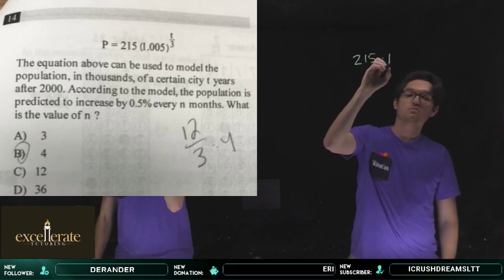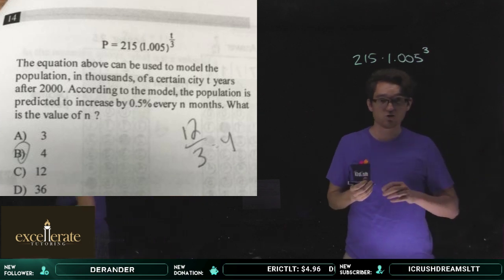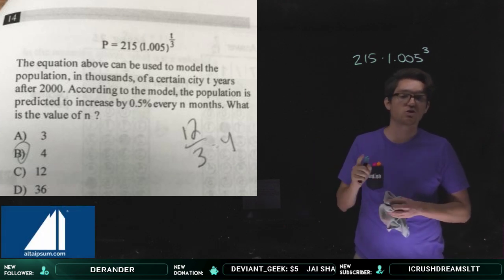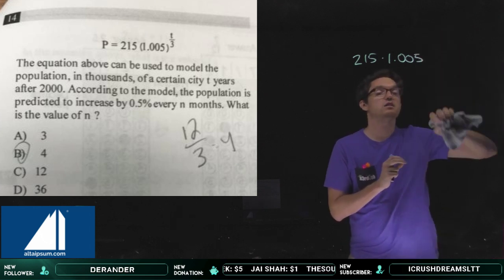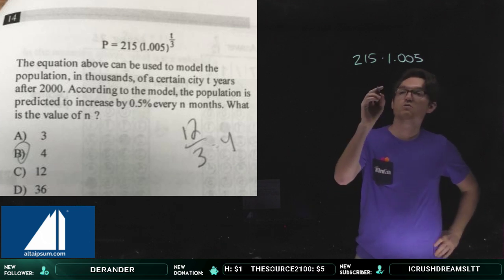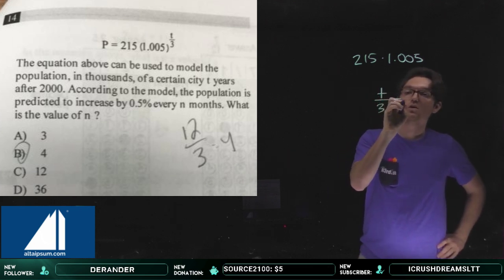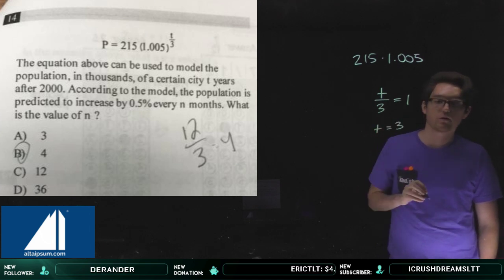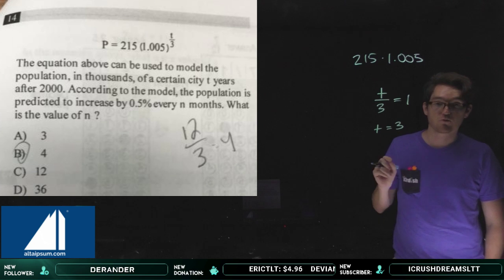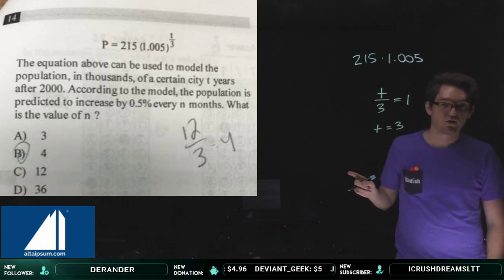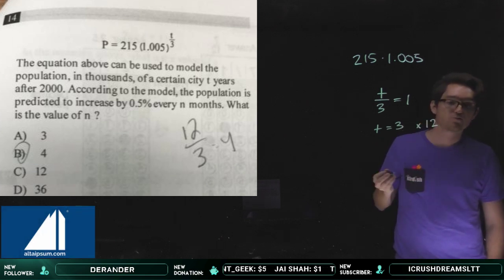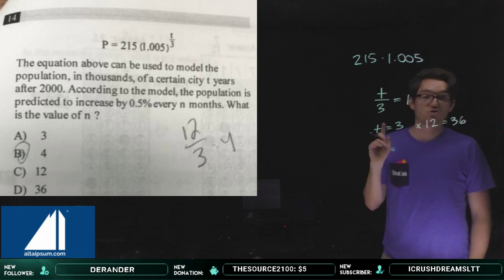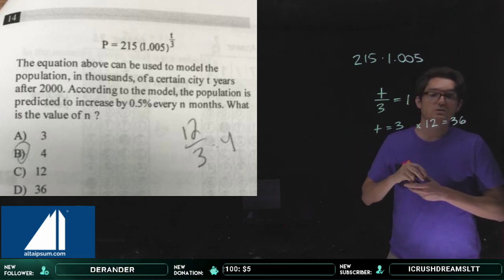To summarize: if you have 215 times 1.005 to the third, you're increasing by 0.5 percent three times. We want to find how many months it takes to increase by 0.5 percent just once. Setting t over 3 equal to 1 gives t equals 3 years, and 3 years is 36 months. The answer is D: n equals 36.